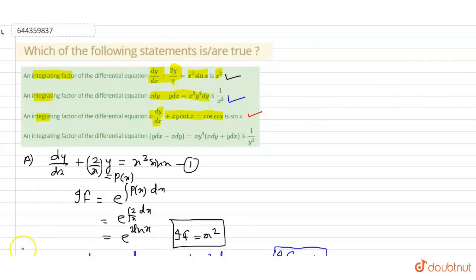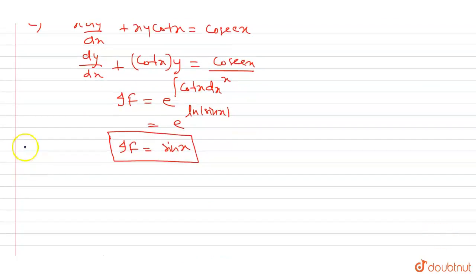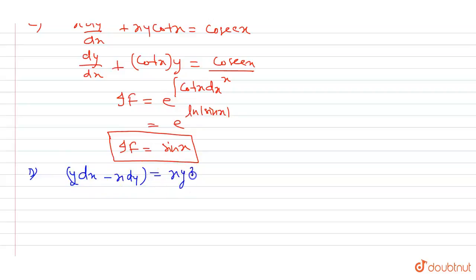Now we check option D. An integrating factor of the differential equation y dx minus x dy equals xy³(x dy plus y dx) is 1/y². The given equation is y dx minus x dy equals xy³(x dy plus y dx), and we have to prove the integrating factor equals 1/y².